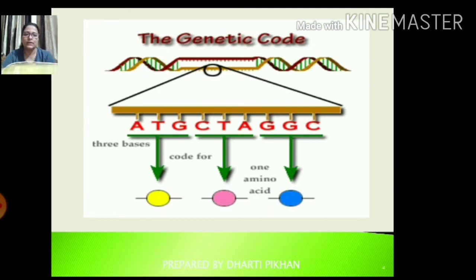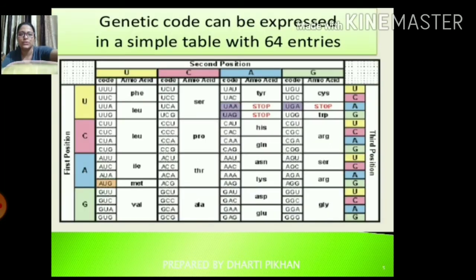Looking at this slide, the genetic code is given. A, T, G — these are 3 bases and they code for 1 amino acid. So these 3 nucleotides and 3 bases code for each amino acid, and for each amino acid there is a specific code. Next, we have the genetic code in table form.